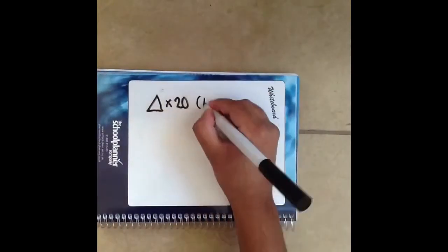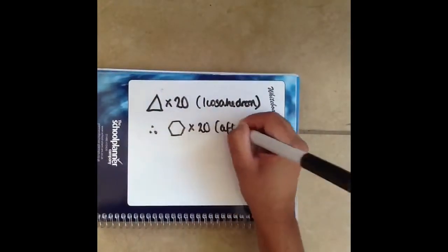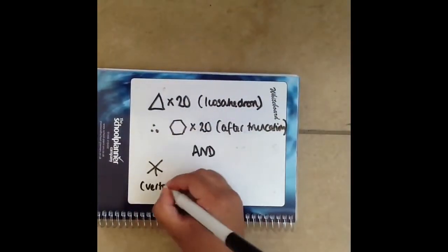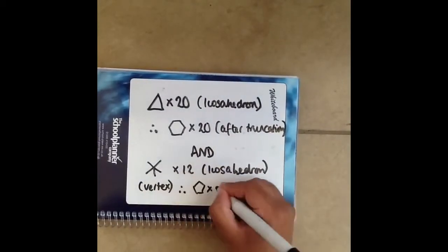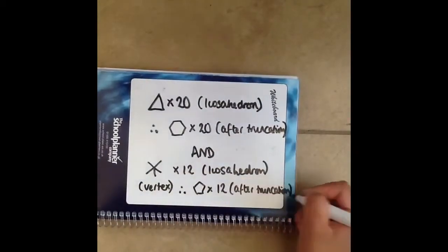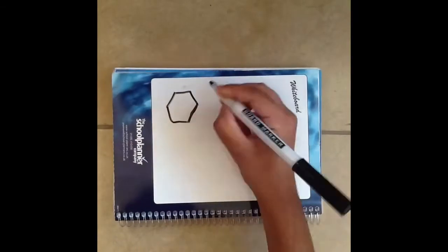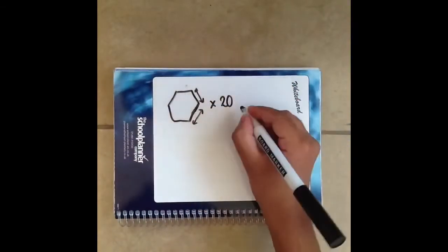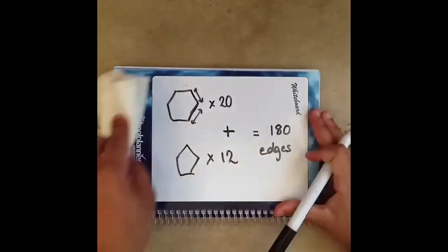How many faces are there? The 20 triangle faces form hexagons and the 12 vertices form pentagons, so there will be a total of 32 faces on the solid. How many edges are there? There are 20 hexagon faces and 12 pentagon faces, so that gives us a total of 180 edges.